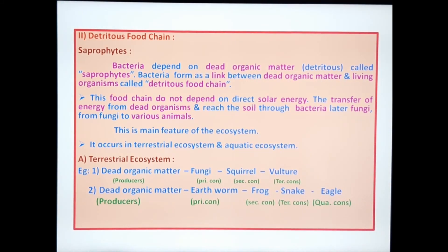The second food chain is the detritus food chain. Saprophytes — bacteria that depend on dead organic matter — form a link between dead organic matter and living organisms, called the detritus food chain. This detritus food chain does not depend on direct solar energy. Energy transfers from dead organisms through bacteria, then fungi, and from fungi to various animals. This is the main feature of the ecosystem.